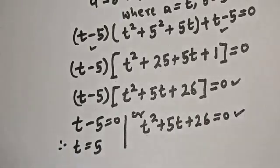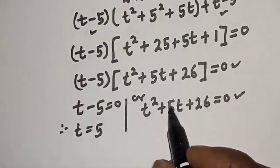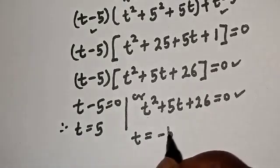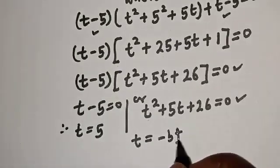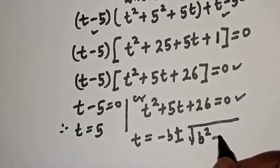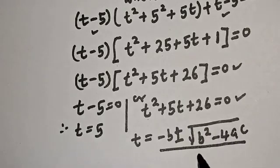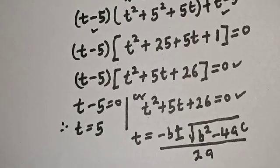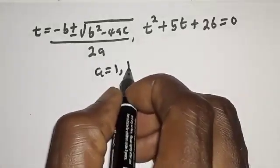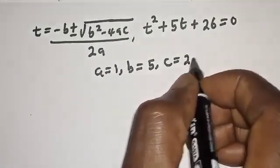The second case is a quadratic equation which can be solved using the quadratic formula: t equals negative b plus or minus square root of b² minus 4ac, all over 2a. From this equation, a equals 1, b equals 5, and c equals 26.